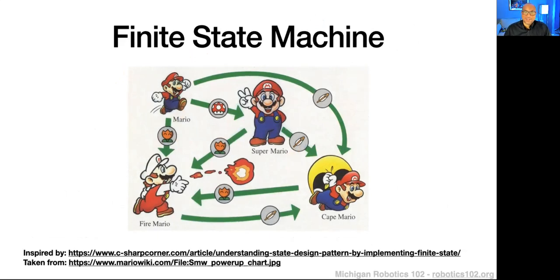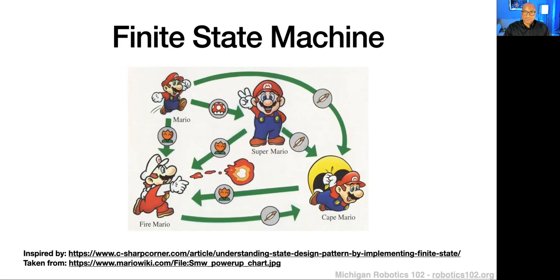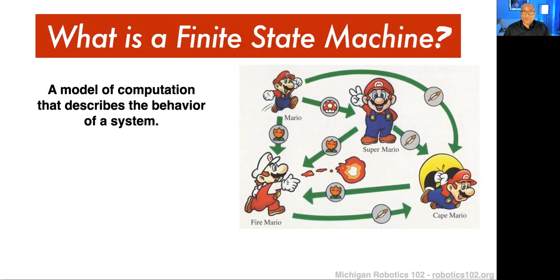On Mario Wiki there's a great picture that shows how Mario's state can change depending on which objects or items he comes in contact with. You can have Mario touch the mushroom and he becomes Super Mario. If Mario or Super Mario touches the flower, they can become Fire Mario. Or if it touches the feather, it becomes the cape. This really is representing the behavior of Mario throughout the game, how he changes his state. Finite state machines are great for expressing this.